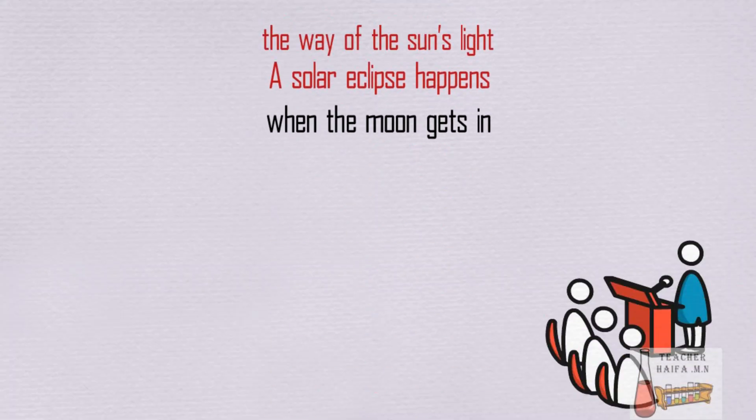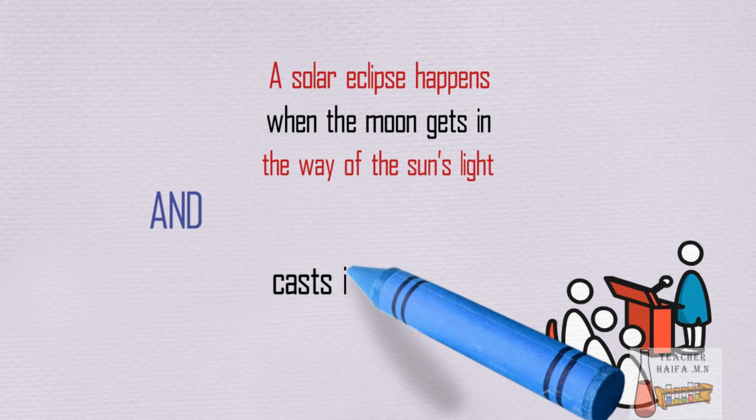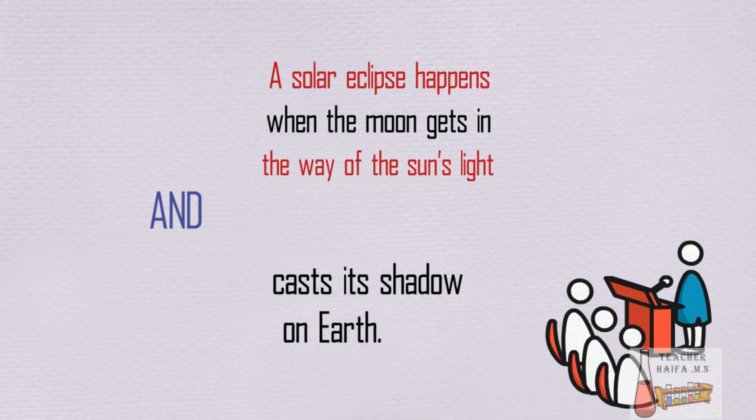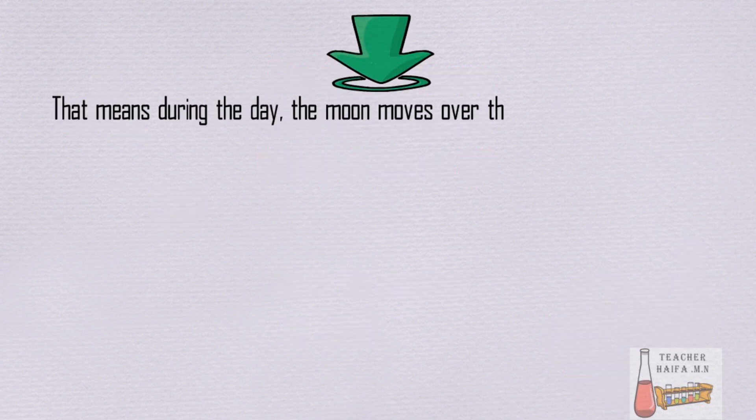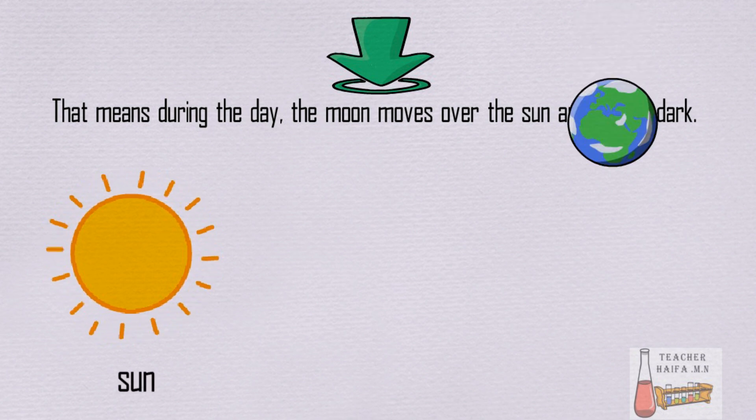A solar eclipse happens when the moon gets in the way of the sun's light and casts its shadow on Earth. That means during the day, the moon moves over the sun and it gets dark.